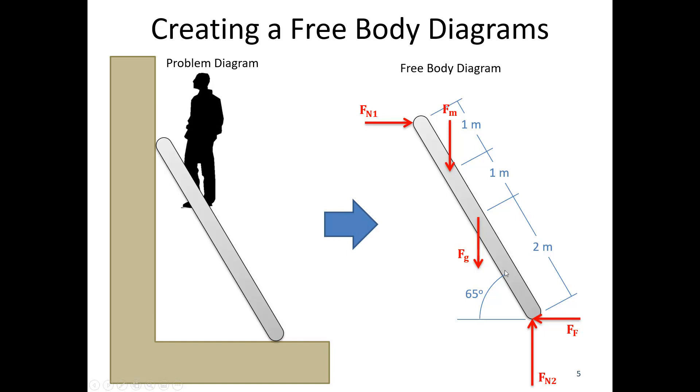I also want to get in any key angles, so in this case the angle of the ladder itself and any key dimensions. The man is one meter down from the top. It's another one meter from the man to the center of the ladder where the gravity force acts, and it's two meters to the bottom here. More information on creating free body diagrams can be found in section 1.4 of the textbook.